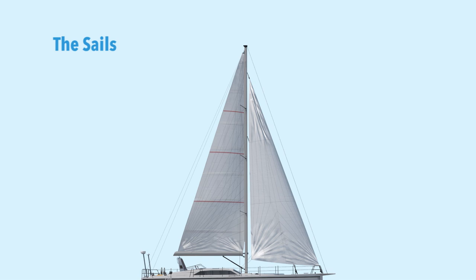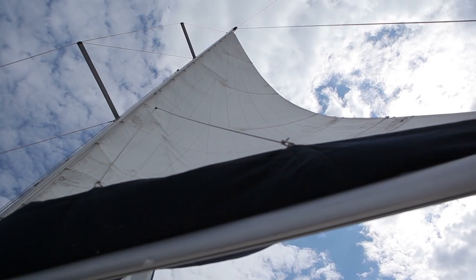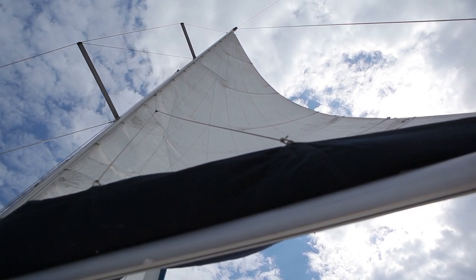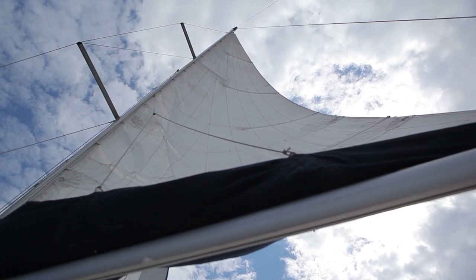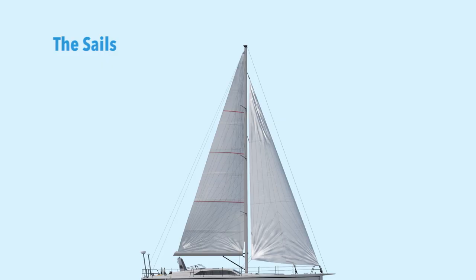Some mainsails also have battens. Battens are like sail reinforcers — they run horizontally and they flatten and stiffen the sail. You can see them inside the sail. Then we have telltales, which are small strings you can use to tell whether your sail trim is correct. Both your jib and mainsail have telltales. So that's it — those are the sails.